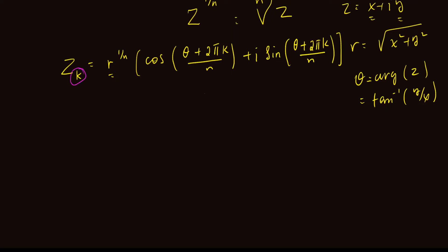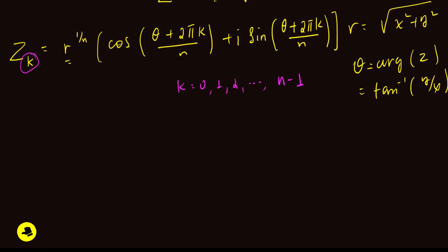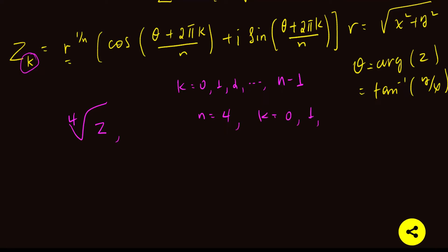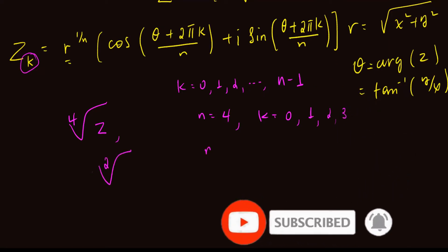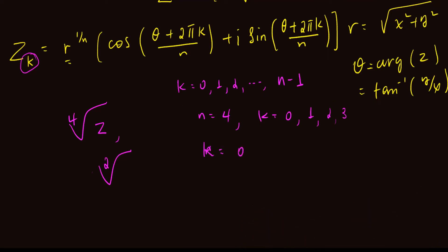k is a number starting from 0, 1, 2, up to n minus 1. So for example, if you are looking for the fourth root of a complex number z, then n will be 4 and k will be 0, 1, 2, and 3. If you are looking for the square root, then n is 2 and k will be 0 and 1.